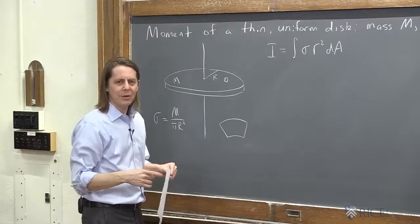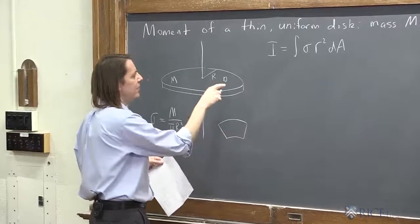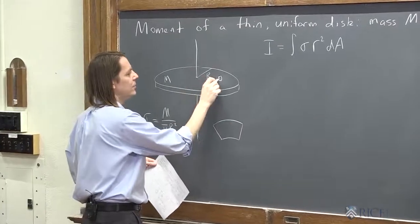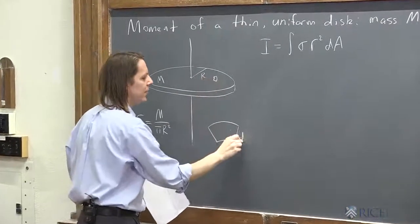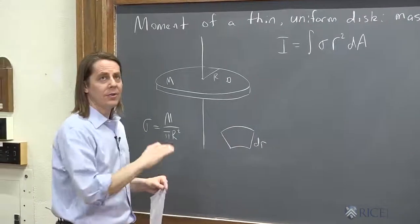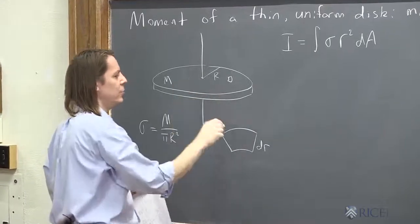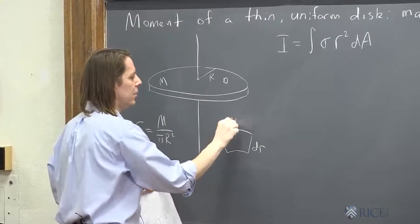When it's a teeny little element, you treat it basically like a rectangle, and you say, how far is it this way? Well, it's dR. You're at some radius R, and you go out dR. So that's dR. And then how far is it this way? Well, that's an arc length. That's the radius you're at times d theta as you go around. So that's R d theta.